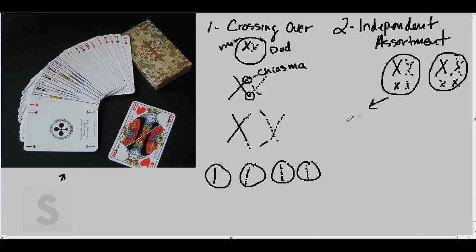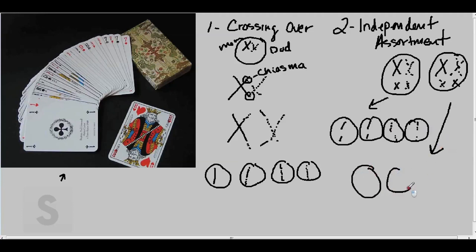So when this goes to form the gametes, in this particular situation, you'll have all of dad and all of mom together. In this particular situation, which is a 50-50 chance, you'll have half mom and half dad. It's a mixture.